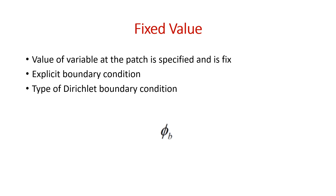So what is fixed value? The value of the variable is mentioned at the patch, which we explicitly specify, and it is fixed. The boundary value is not dependent on any other internal value, so this is an explicit boundary condition. This is a type of Dirichlet boundary condition where the boundary value is fixed, and we denote it by phi_b.